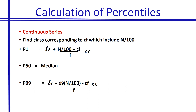For percentiles in continuous series, we find the class corresponding to the cumulative frequency that includes n/100. For P1, the formula is: L1 + (n/100 − Cf)/F × C. P50 equals the median. For P99, the formula is: L1 + (99n/100 − Cf)/F × C. For P35, it becomes: L1 + (35n/100 − Cf)/F × C. This is how quartiles, deciles, and percentiles are calculated in a continuous series.